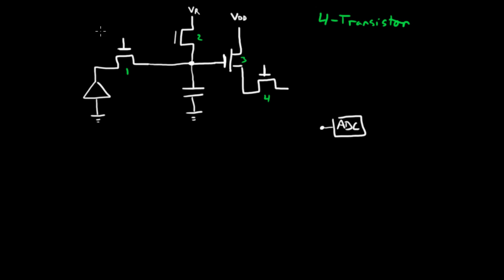This transistor is called the transfer gate. Transfer gate. And that keeps charge that builds up over here from interacting with the rest of the circuit unless you wanted to. And this is the transistor that would be eliminated if you went to a 3 transistor arrangement.